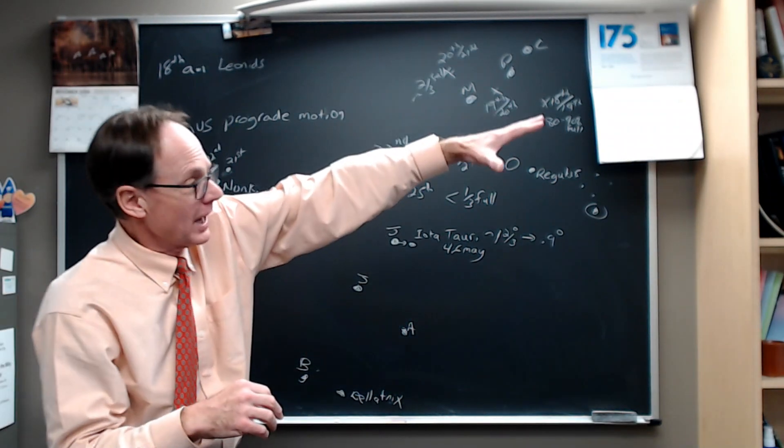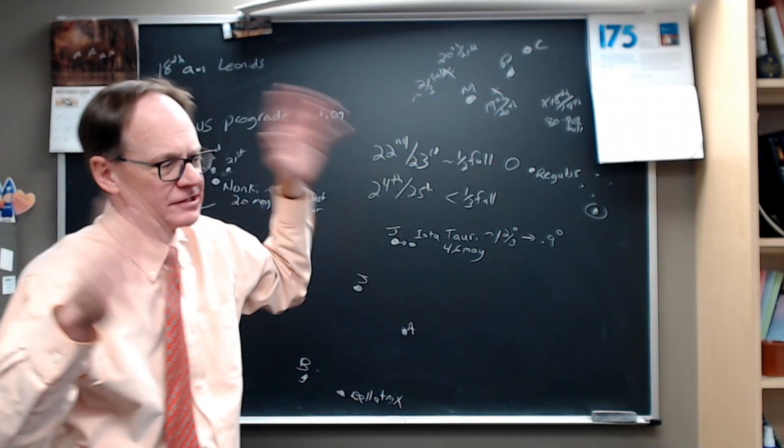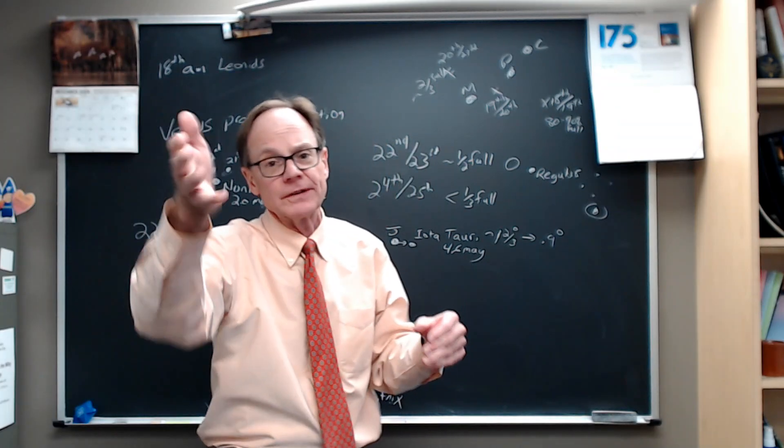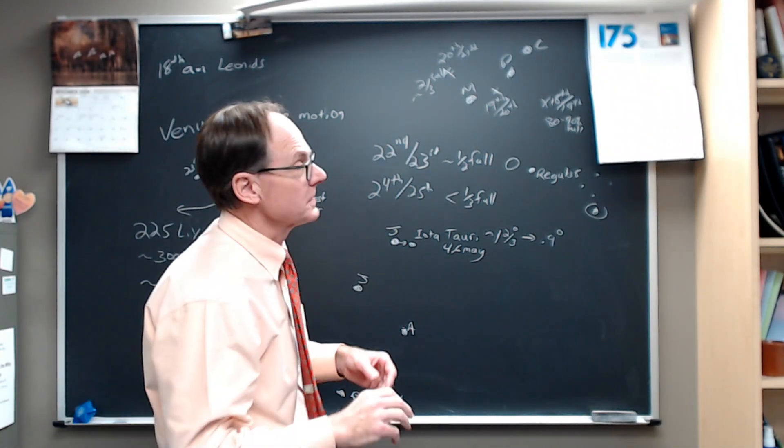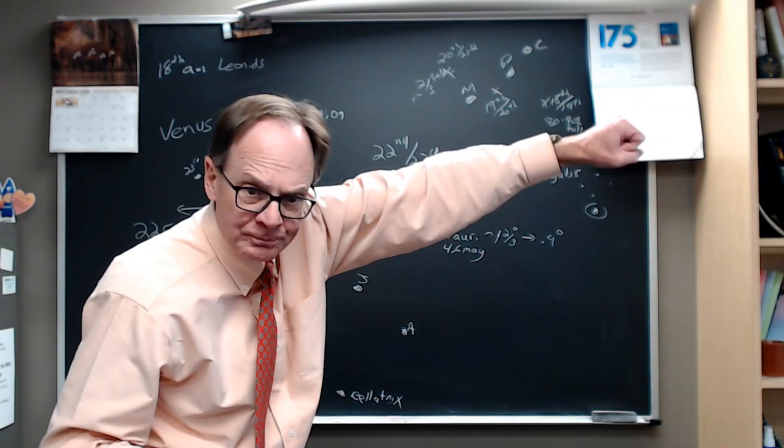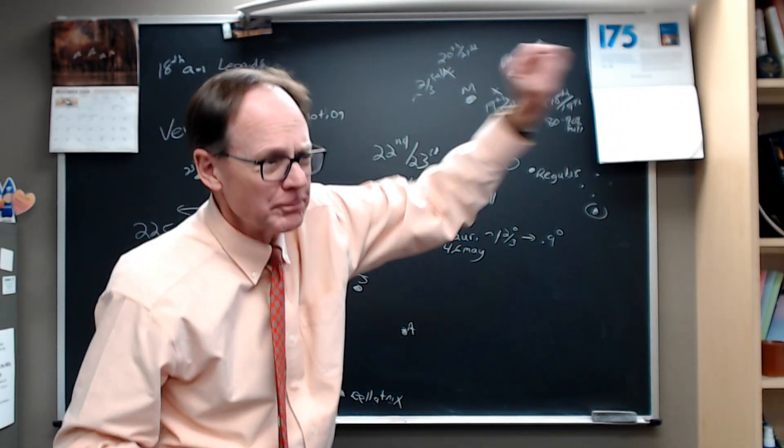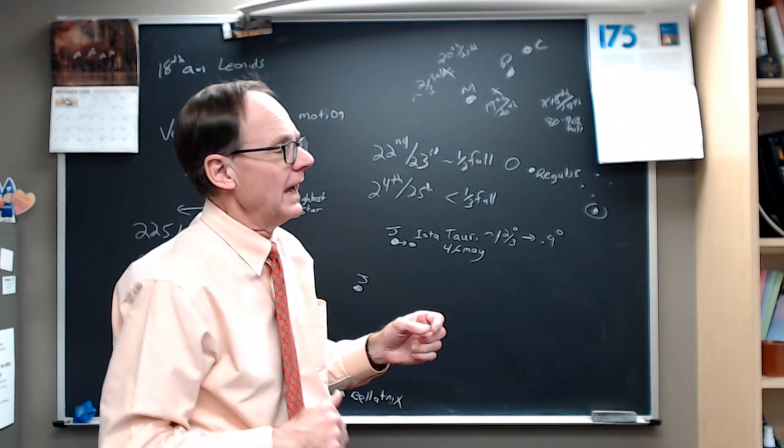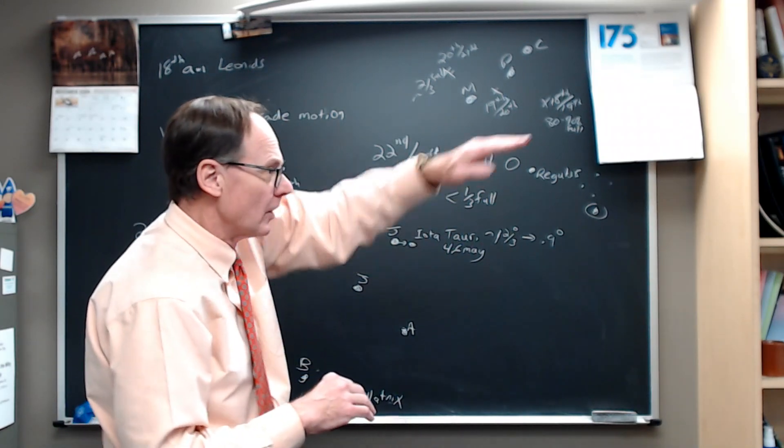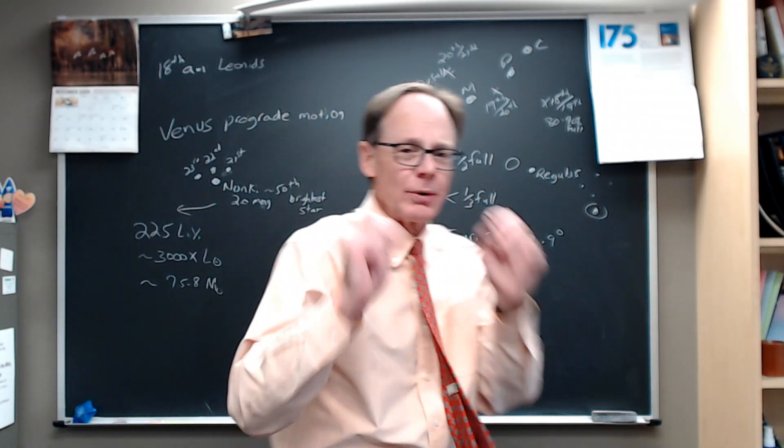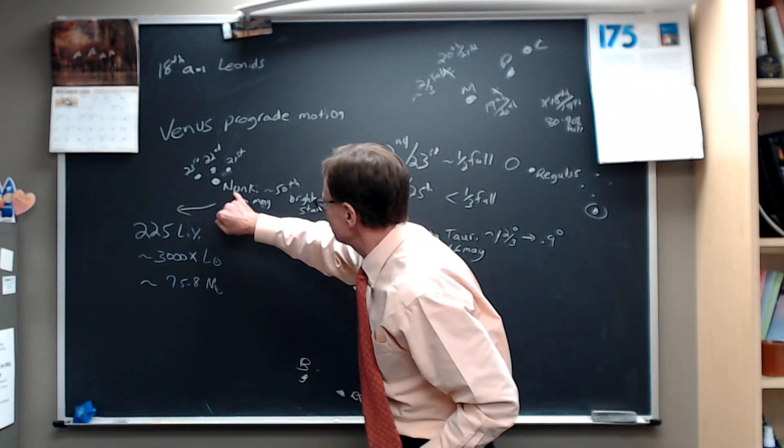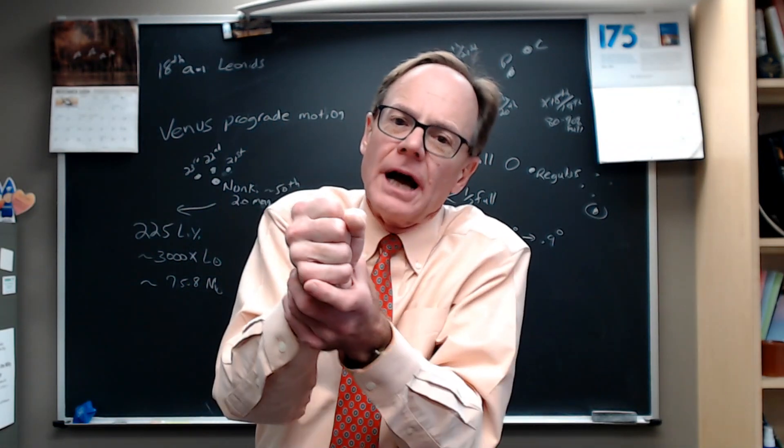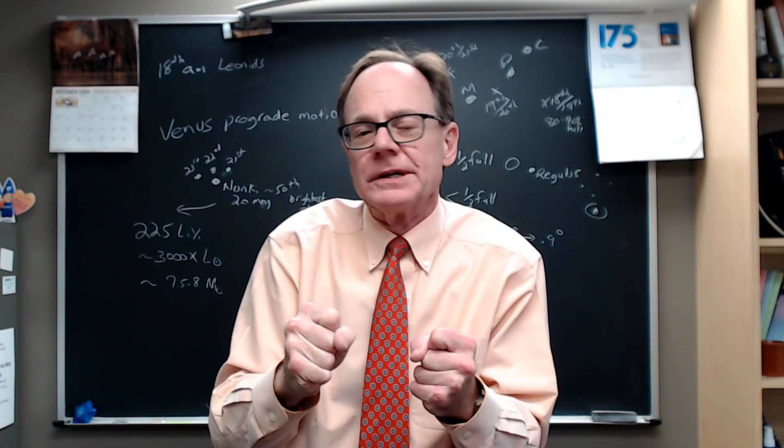Venus is a big, bright object in the evening sky. Get out right after sunset. Sunset's early right now for those of us in the Northern Hemisphere. Venus is the big, bright dot just after sunset in the southwest. It's going to be the biggest, brightest thing there. Venus is in prograde motion, moving easterly against the background stars. Right now, this week, it's passing by Nunki, which is one of the handle stars in the teapot asterism of Sagittarius.